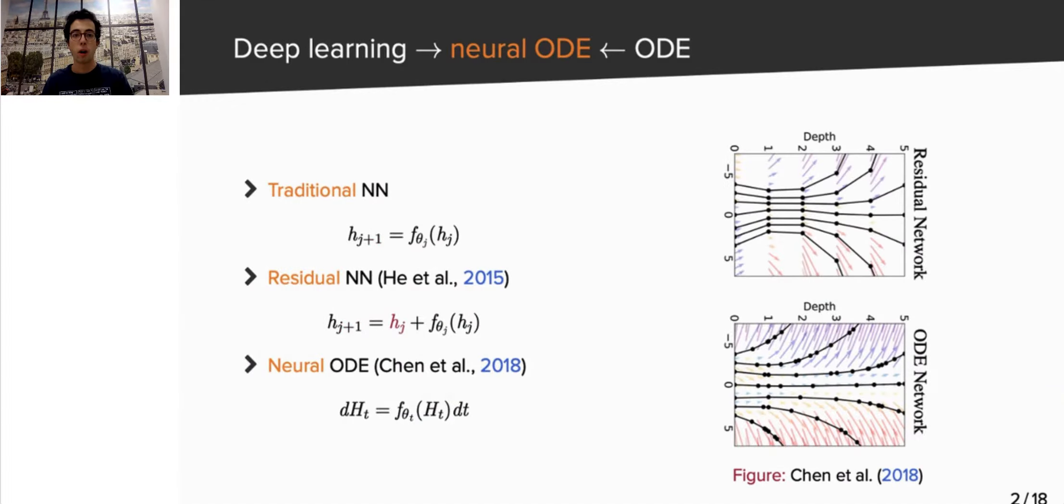As you are probably aware, doing maths on deep neural networks is a difficult task. However, there is a promising recent direction coming from the paradigm of neural ordinary differential equations. Essentially, the idea is to replace a discrete layer equation by a continuous one.